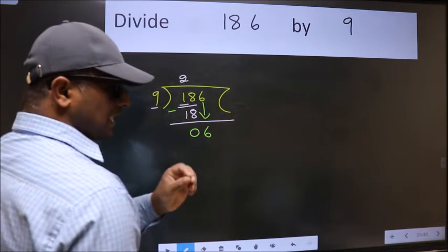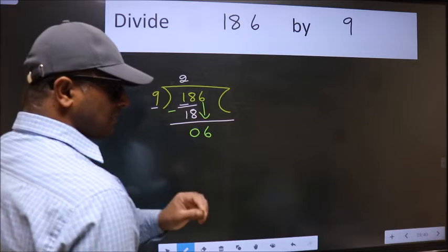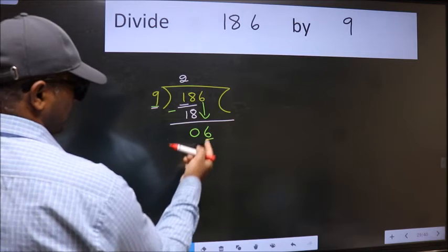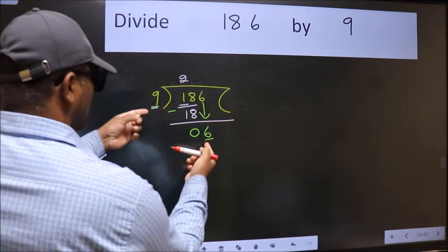After this step, the mistake happens and the mistake is this. Here we have 6 and here 9. 6 is smaller than 9.